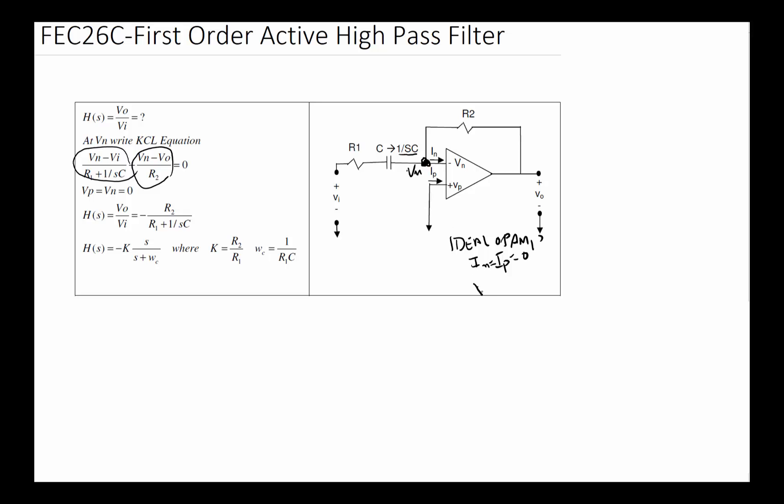Also we know that for ideal op-amp, VP equals VN. But in this case VP is connected to zero, so that gives us this condition that would allow us to simplify this equation and then isolate Vout over VN.